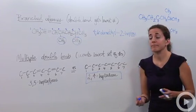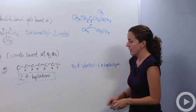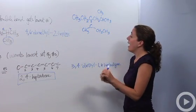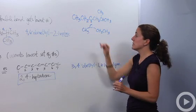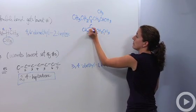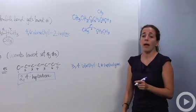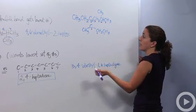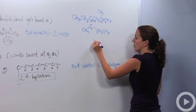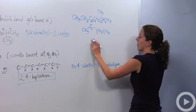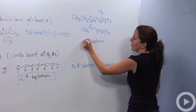Let's put this into practice with a compound. First, as always, we figure out which is our parent carbon chain — and it must contain the double bond. Starting from the bottom and counting: one, two, three, four, five, six, seven — so we know it's a heptene, because 'hept' is a prefix for seven and 'en' is a suffix for double bond. The double bond is between the third and fourth carbons, making it 3-heptene.